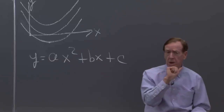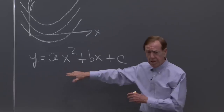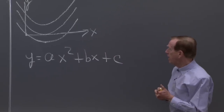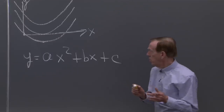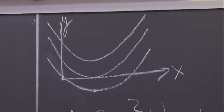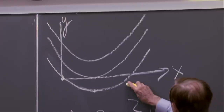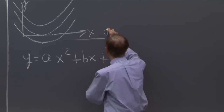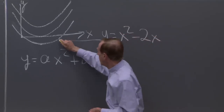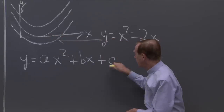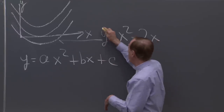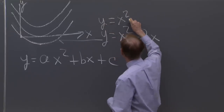A good start is to connect the algebra — these letters — to the graph, the picture, the geometry. I've drawn three quadratics up there, three particular ones. Let me tell you what a, b, and c are. You see that those quadratics are just almost the same shape, just lifted up. So this first one is y equals x squared minus 2x. And this one is up a little higher. The c is what moves it up and down — that's the easy part. It doesn't change the shape, just shifts it up.